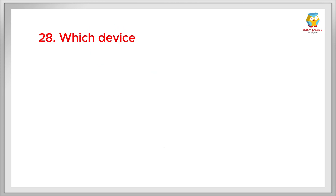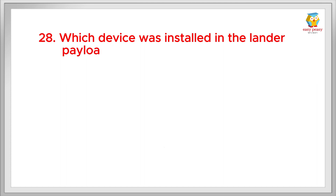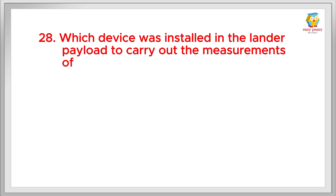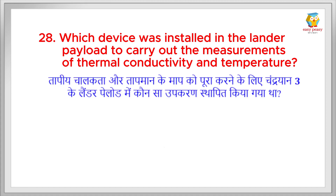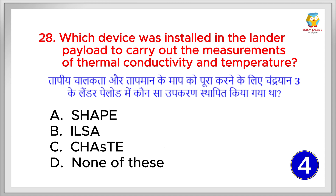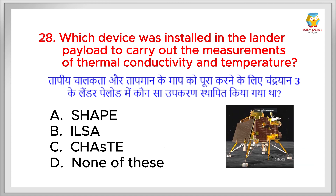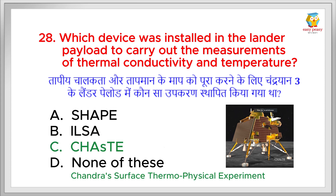Which device was installed in the lander payload to carry out measurements of thermal conductivity and temperature? Taapiya chalakta aur taapman ke map ko poora karne ke liye Chandrayaan 3 ke lander payload mein koun sa upkaran sthapit kiya gaya tha? The correct answer is Option C: Chandra Surface Thermophysical Experiment.